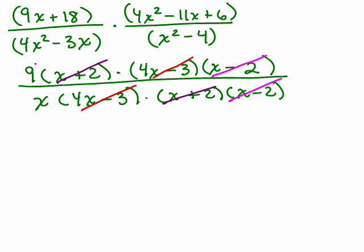What's left? 9 over x. So our answer is 9 over x. So that is how we multiply rational expressions. We factor, and then we see if we can cancel anything. So don't just start off trying to multiply 9x plus 18 times 4x squared minus 11x plus 6. Yikes! Way, way too hard, and then you would get stuck and not know how to factor it. Okay, that's it for this video.